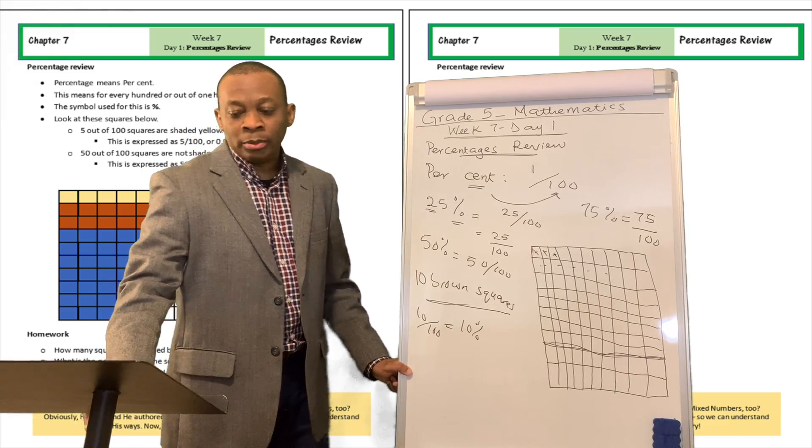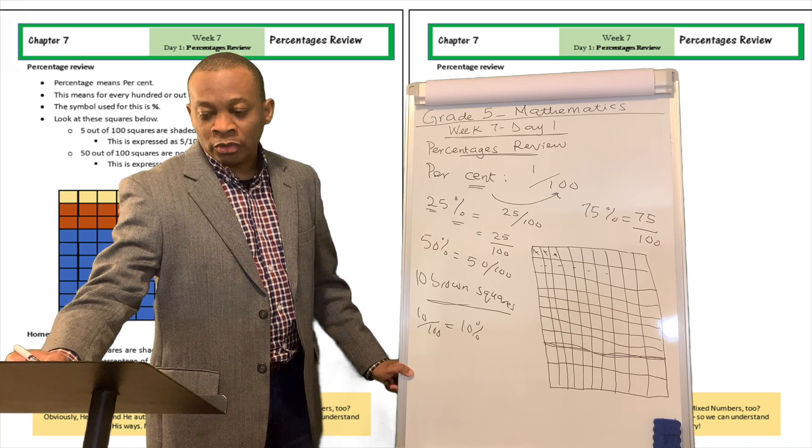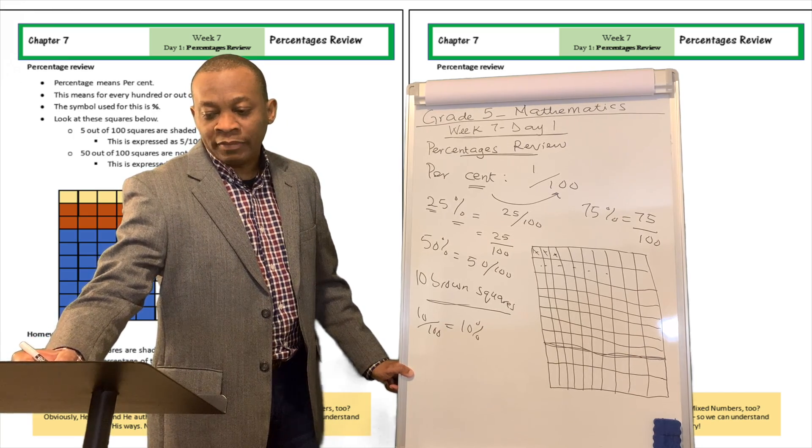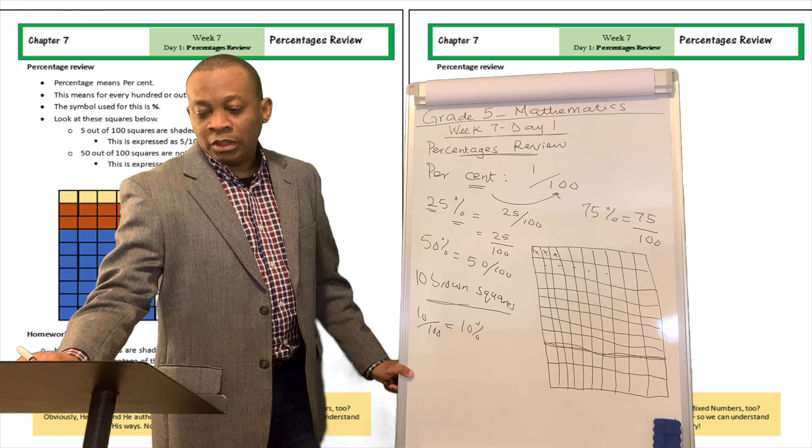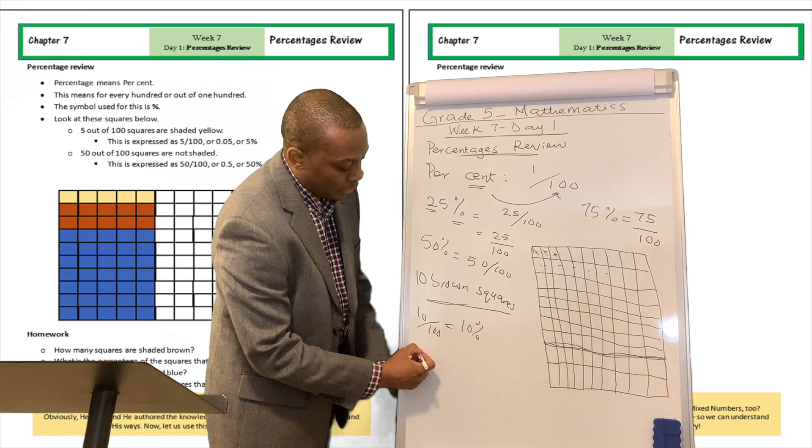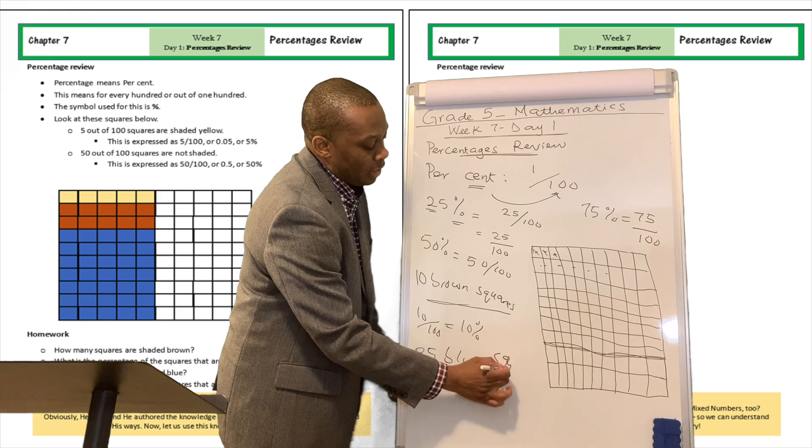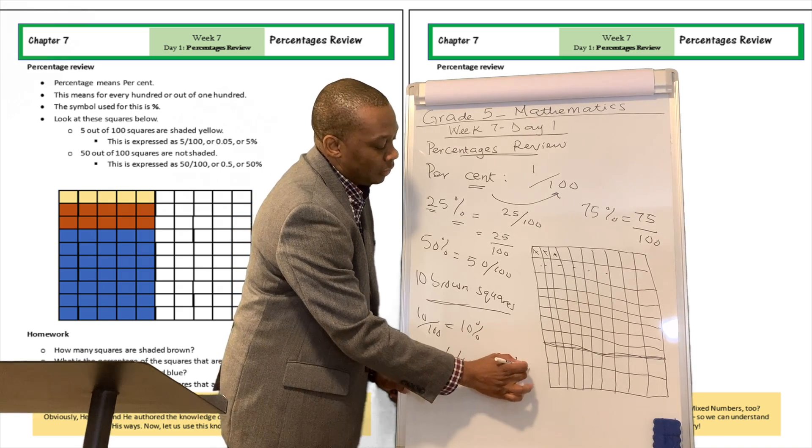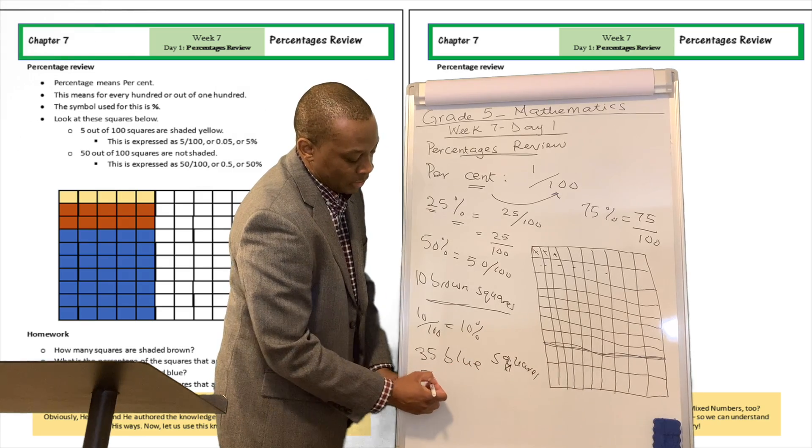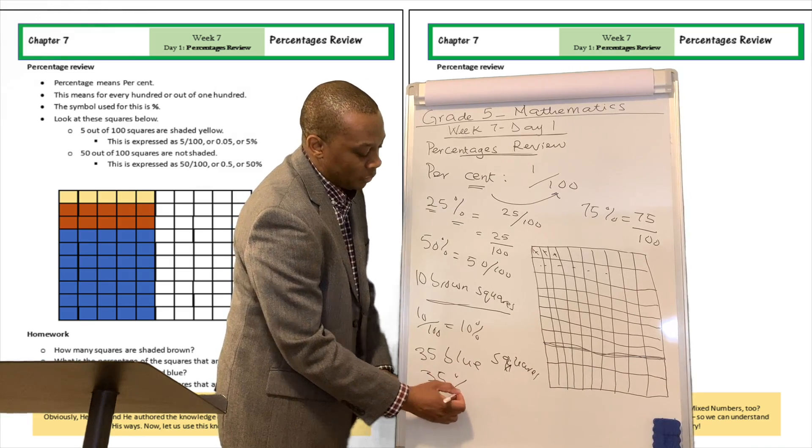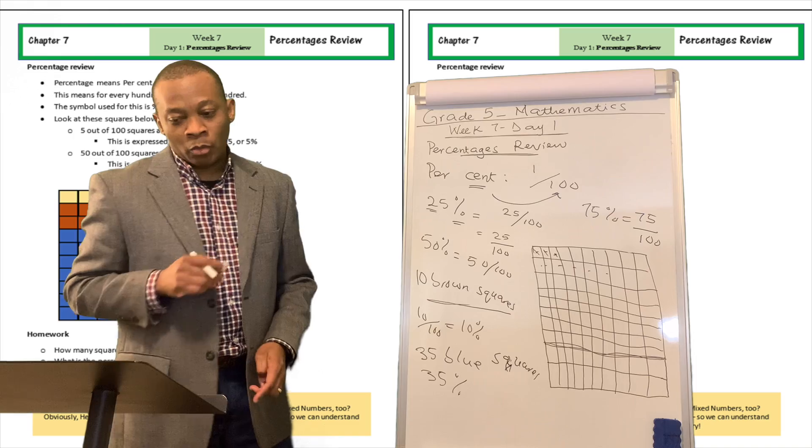How many squares are shaded blue? Well, if you were to count it out, 1, 2, 3, 4, 5, 6, 7... 1, 2, 3, 4, 5. There are going to be 35 blue squares. So what percentage is that? That's going to be 35% or 35 divided by 100.